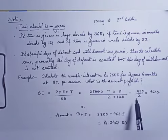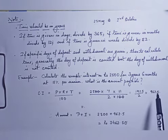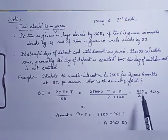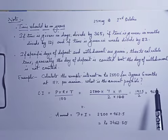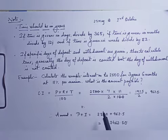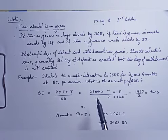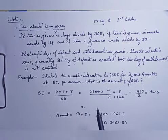When you calculate, you get 1925 upon 2, which is approximately 962.5. So the interest is rupees 962.5. The amount payable is Amount = Principal + Interest = 2500 + 962.5 = rupees 3462.50. I hope all the topics are clear to everyone.